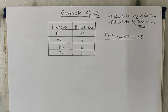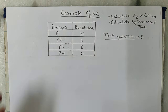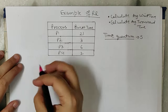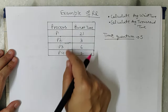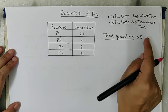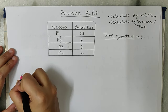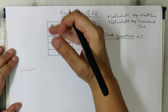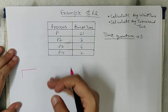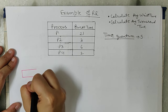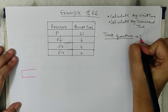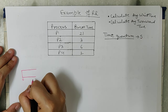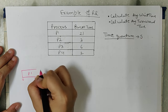In this example we have to calculate average wait time and average turnaround time. Let's calculate this by first drawing the Gantt chart. According to RR, every process will get the CPU for 5 minutes, and they will get the CPU in the order they are standing in the ready queue. So the first turn is P1. P1's burst time is 21 and it will get the CPU for 5 minutes, so from 0 to 5 P1 will get the CPU.